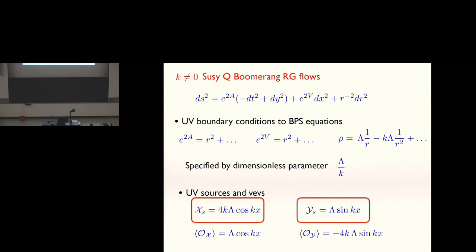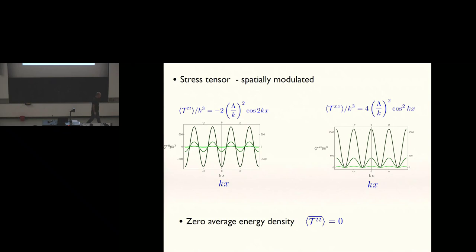If you follow through holographic renormalization using those boundary terms I said before, you'll find you have a source for the delta is one operator of this form and a source for the delta is two operator of this form. That's that correlation between the two that's preserving supersymmetry. We have VEVs for the corresponding operators. An interesting fact is that the stress tensor is spatially modulated. So why is that interesting? If you think about a Q-lattice construction for a second, the metric is independent of the spatial coordinates. So naively, you would expect the stress tensor is going to be spatially homogeneous.